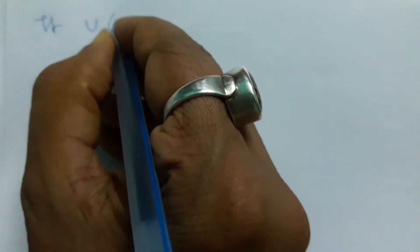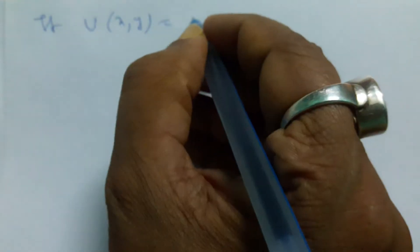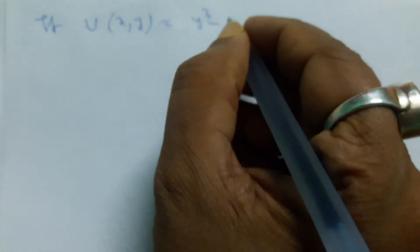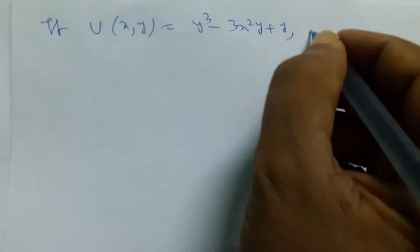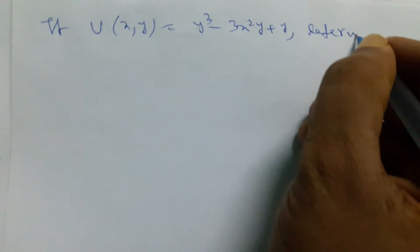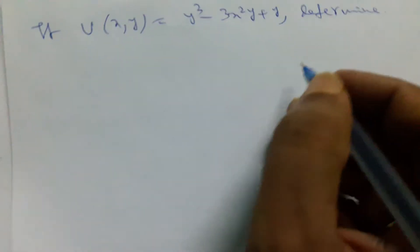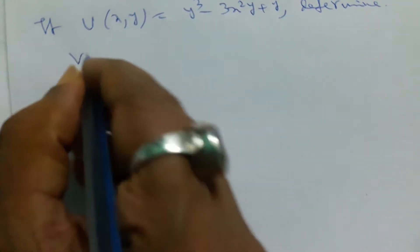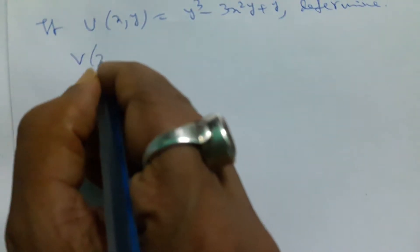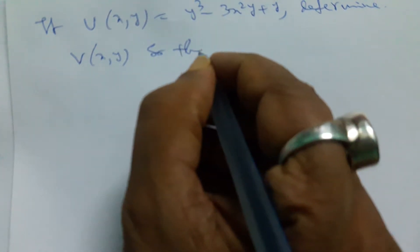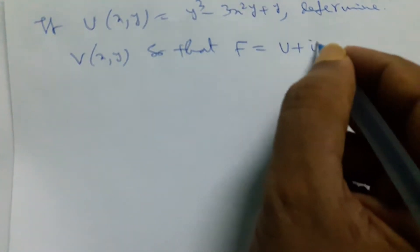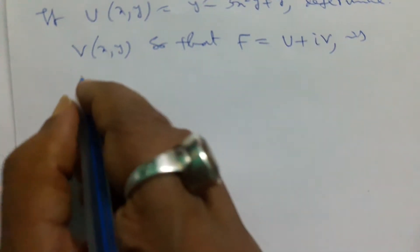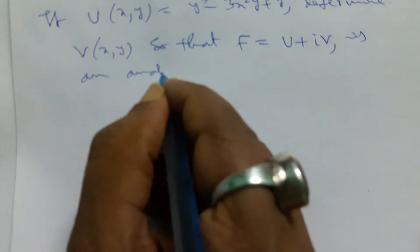If u is the function of xy equal to y cube minus 3x square y plus y, determine vxy so that f is the function of u plus iv is an analytic function.